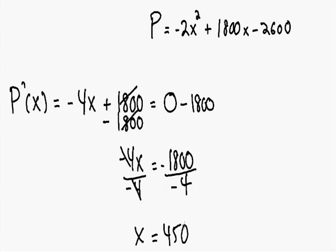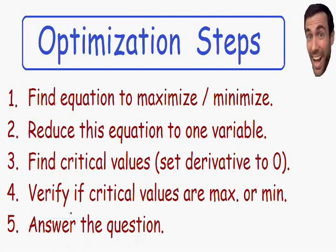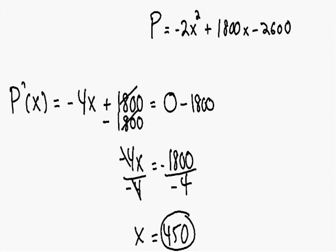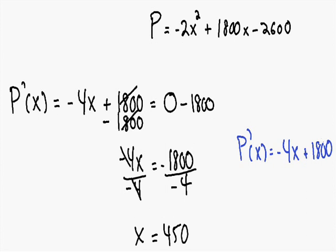Our critical value is x equals 450, and now we are ready for step number 4: verify if the critical values are maximums or minimums. We need to verify if 450 is a maximum or a minimum using the second derivative test. Rewriting the first derivative as negative 4x plus 1800, the second derivative with respect to x equals the derivative of negative 4x, which is negative 4, plus the derivative of 1800, which is zero. So our second derivative is equal to negative 4.